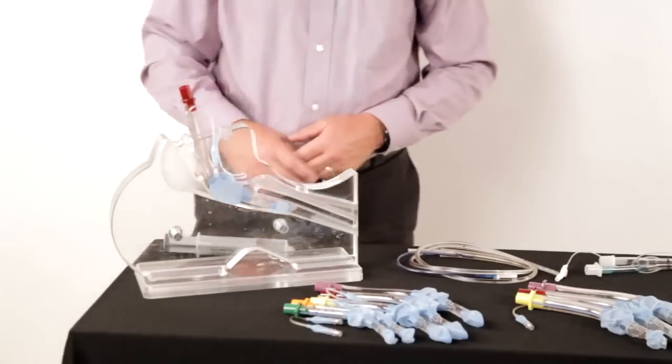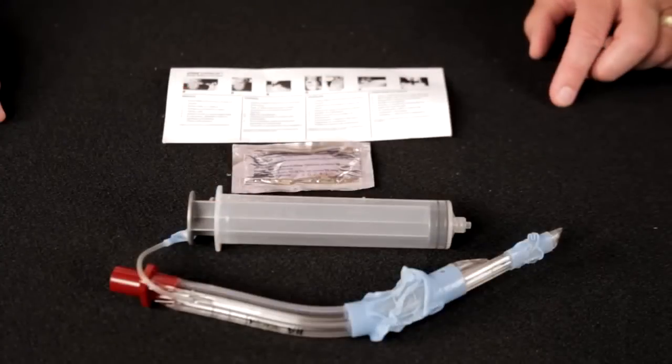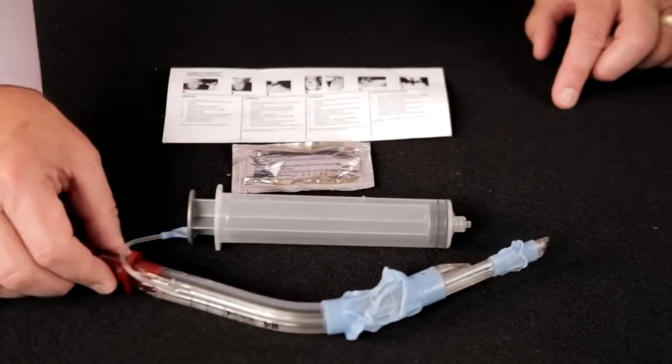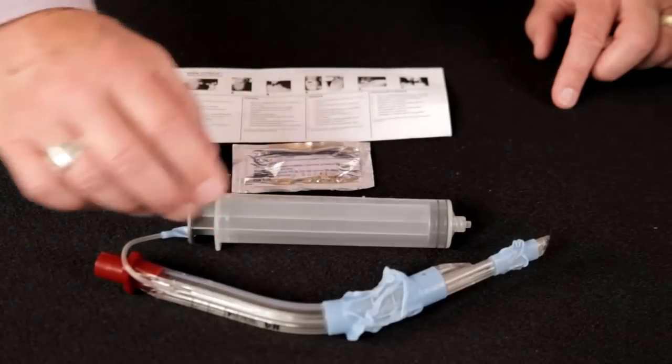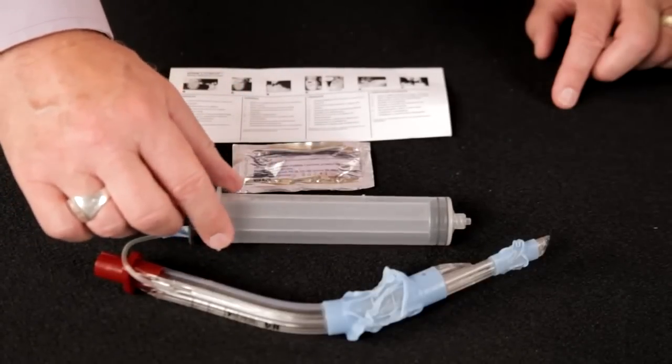Both the King LTSD and the King LTD are available in a kit, which includes the airway itself, a syringe, 60 cc for the adult sizes,